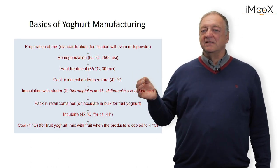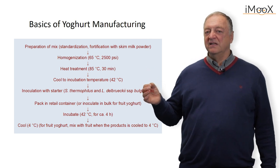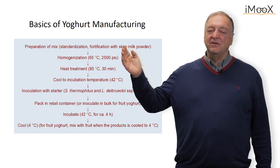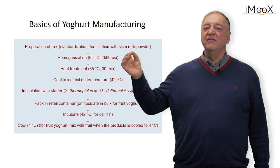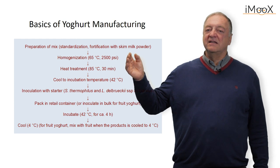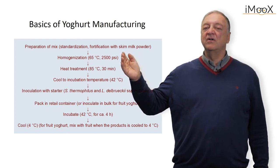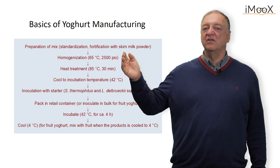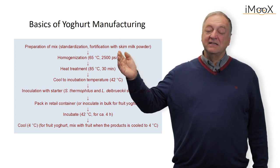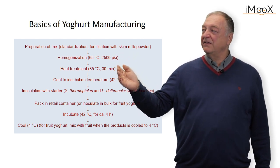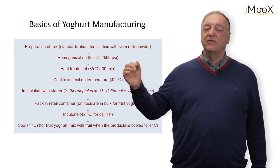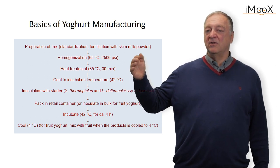The process that is carried out for yogurt production is shown here. We start with the standardization of milk, giving the milk a specified concentration of fat. After this standardization, we do the homogenization to have a homogeneous distribution of the milk fat globules, which is done at 65 degrees. After the homogenization, there is the heat treatment at 85 degrees for 30 minutes.